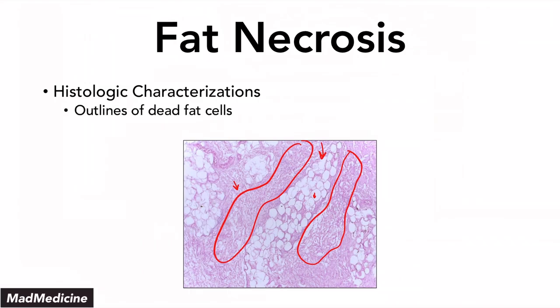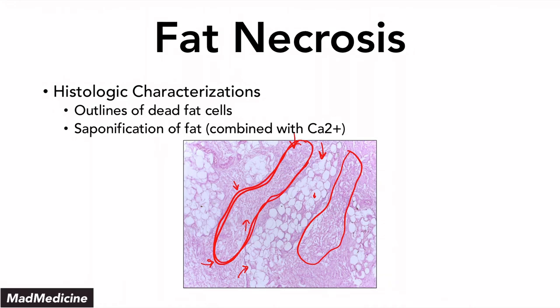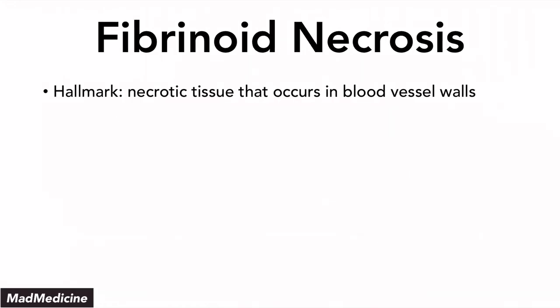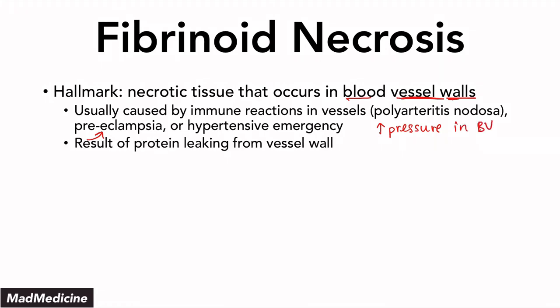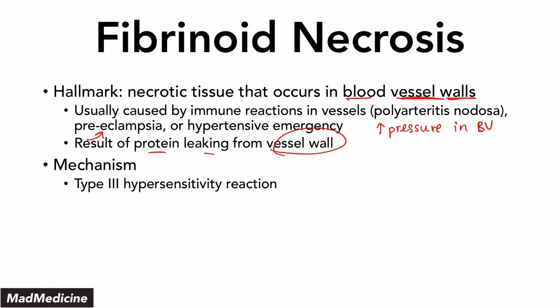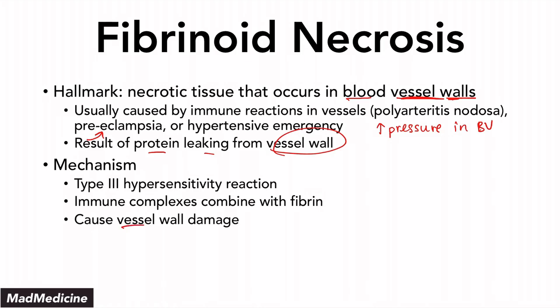The histologic characterization you need to remember for fat necrosis is the outlines of the dead fat cells and the saponification of the fat occurring in that large region. Finally, we're going to talk about fibrinoid necrosis, which usually occurs in blood vessel walls — that's the hallmark location. Usually this is because of some immune reaction that's happening, such as polyarteritis nodosa, preeclampsia, or a hypertensive emergency leading to high pressures in blood vessels. You're going to see proteins leaking from the vessel walls, which is the main hallmark.